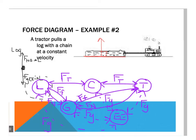We have the force of tension, which is pointed along the string — the force of tension the chain applies to the log. And finally, we have the force of friction opposing the motion — the force of friction that the ground applies to the log. We could also do a force diagram for the tractor, so we'll do that over here. It's interesting to compare them.